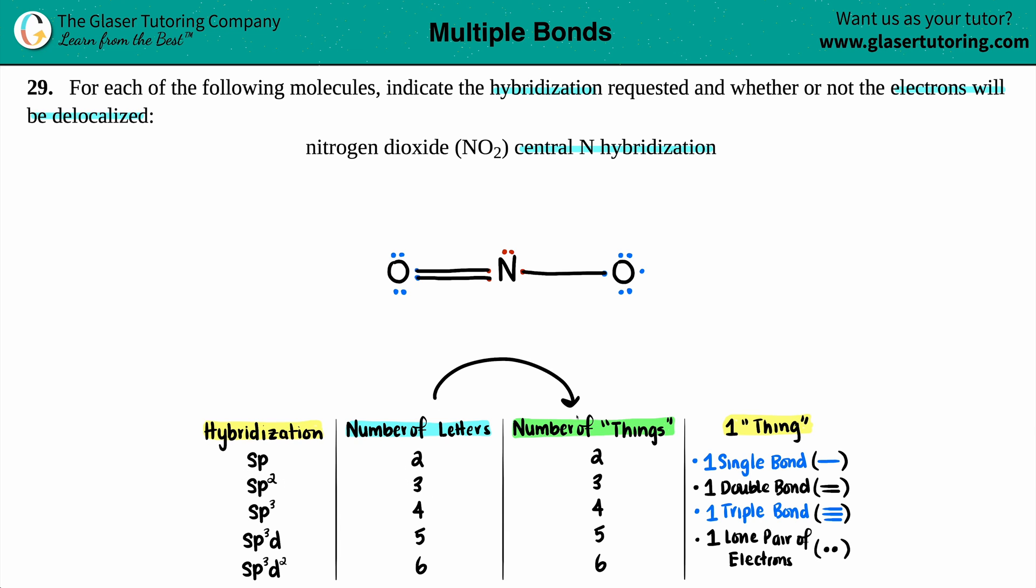The number of letters always corresponds with the number of things surrounding the element that you're talking about, in this case nitrogen. And one thing is either a single bond, a double bond, or a triple bond, so just because you have multiple lines here you still group it together as one thing, or one lone pair of electrons.